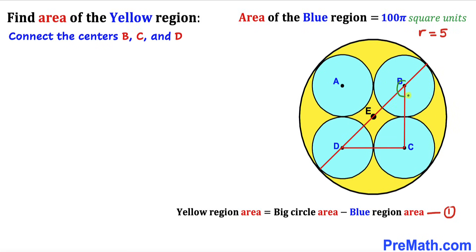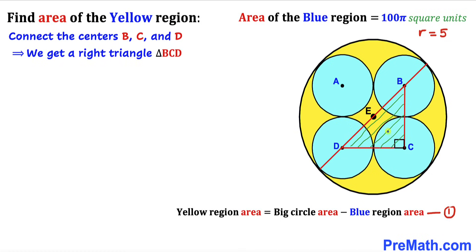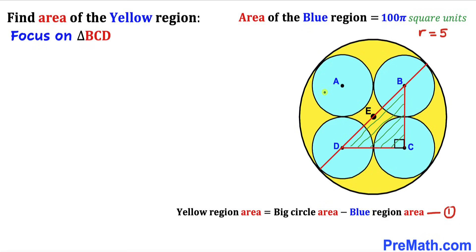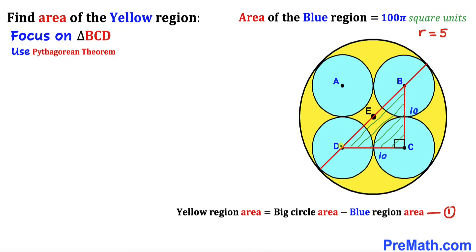We connect the centers B, C, and D, and as a result we get right triangle BCD. The radius of the blue circle gives us BC = 5 + 5 = 10, and likewise side CD = 10 as well. We will use the Pythagorean theorem a² + b² = c² to calculate the hypotenuse BD.